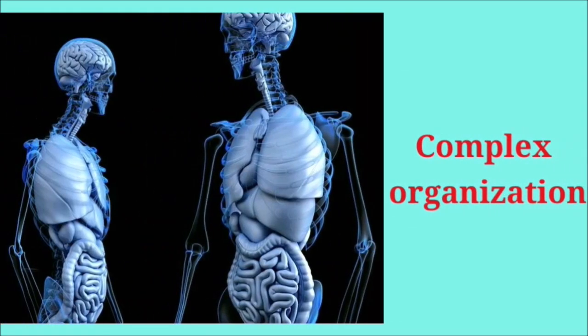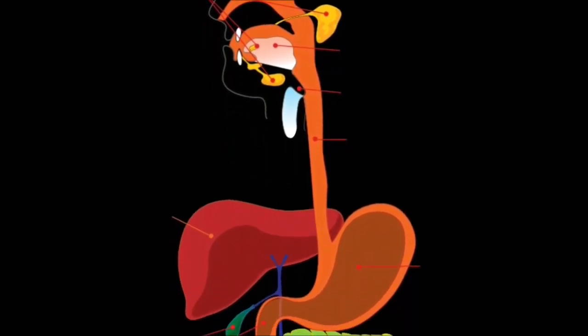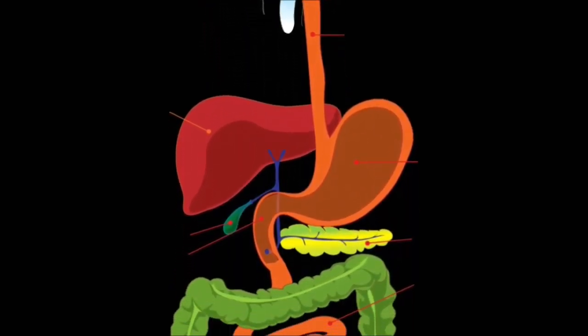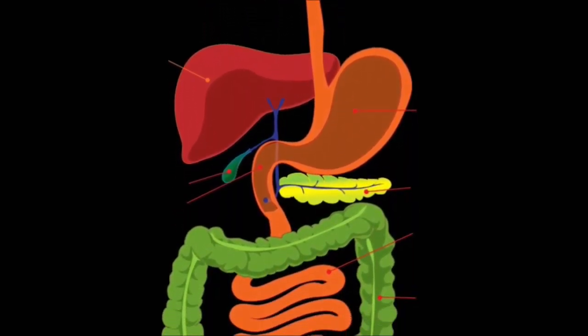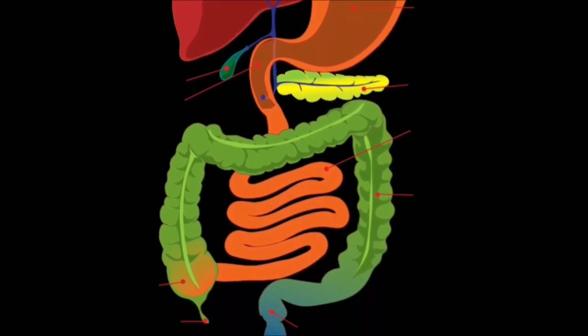Human beings are a complex organization comprising different varieties of organ systems such as the digestive system, respiratory system, circulatory system, nervous system, etc. To take food, digest it, and assimilate, we have a definite organ system known as the digestive system. This is the human digestive system.